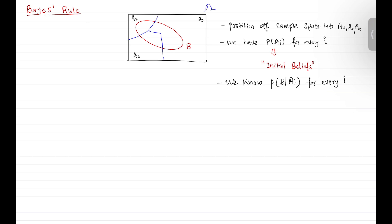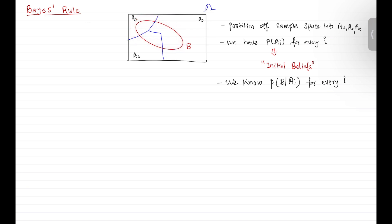Let's suppose we carry out the experiment and we observe that event B occurs. Now once event B has occurred, maybe we should revise our belief about the likelihood of the different scenarios.